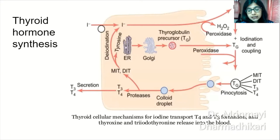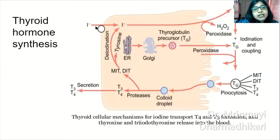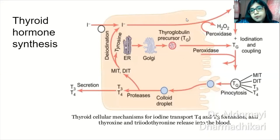Thyroid hormone synthesis starts with iodine trapping — iodine is the most important nutrient for thyroid hormone synthesis. Iodine is transported into the thyrocyte. Iodine trapping takes place by the sodium iodine symporter. Iodine is transported into the follicle of the thyroid gland, where it undergoes oxidation by the thyroid peroxidase enzyme.